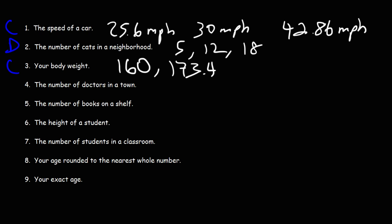The number of doctors in a town - you can't have half a doctor or a quarter of a doctor. You can have 8 doctors in a town, 12 doctors in a town, or 17 doctors in a town. So this would be discrete.